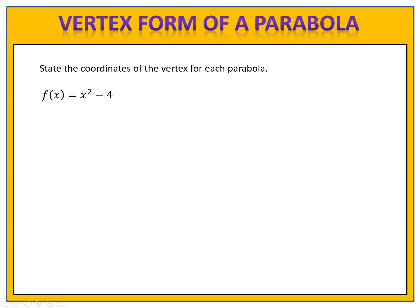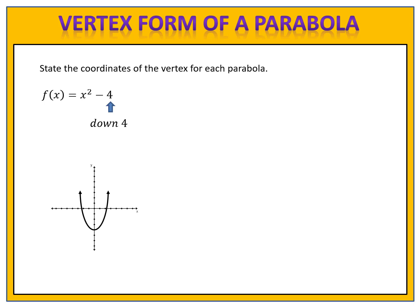Here's an exercise for you to try. Can you identify the coordinates of the vertex for the function f of x equals x squared minus 4? Remember, we start with the parent function with the vertex at the origin, then identify the shift. Please pause the video, find the coordinates of the vertex, and then come back. We identify the shift: we have minus 4 on the outside, and therefore our parabola will shift down 4 units, giving us a vertex at (0, -4).